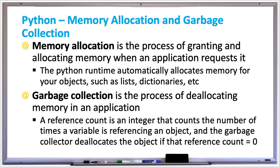And garbage collection is the process of deallocating that memory in your application. A reference count is an integer that counts the number of times a variable is referencing an object, and the garbage collector deallocates the object if that reference count is equal to zero.